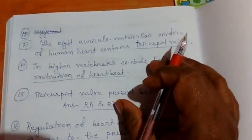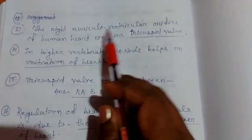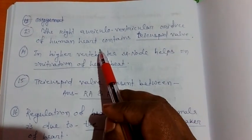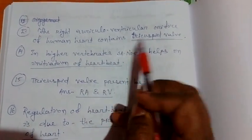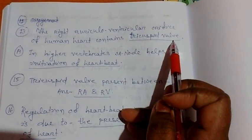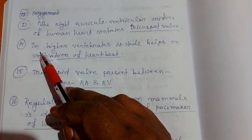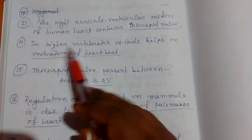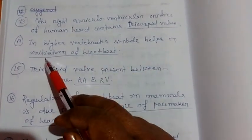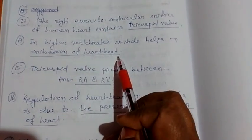The next question: the right auriculoventricular orifice of human heart contains the tricuspid valve. Question number 14: in higher vertebrates, SA node helps in the initiation of heartbeat.